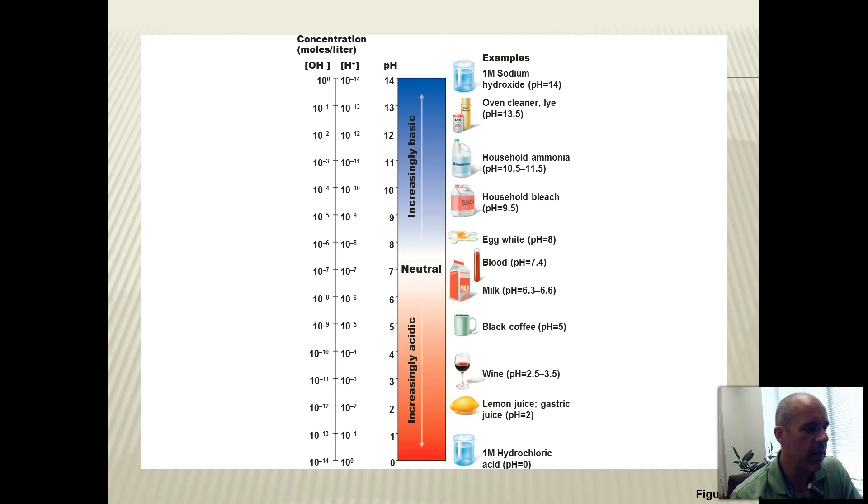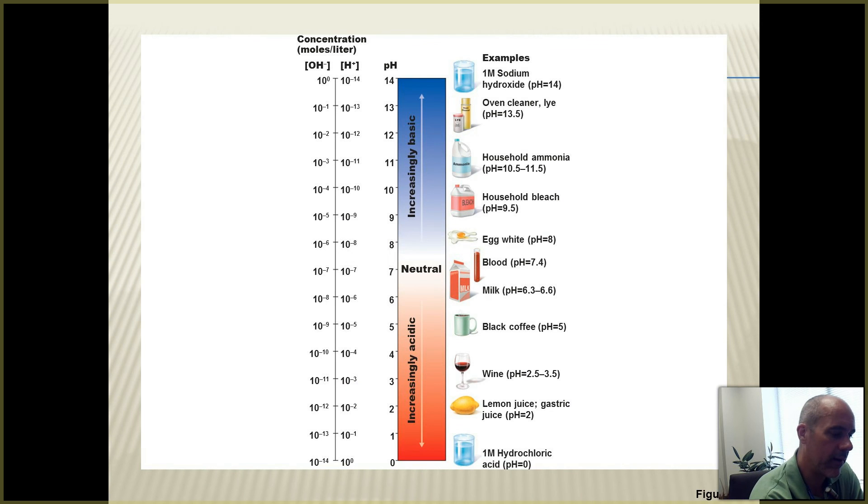This is a diagram from your textbook, which is just trying to give you some frame of reference for these different pH values and things that we are familiar with. One thing I want to point out to you here, we see blood on here, good old human blood, pH of 7.4.